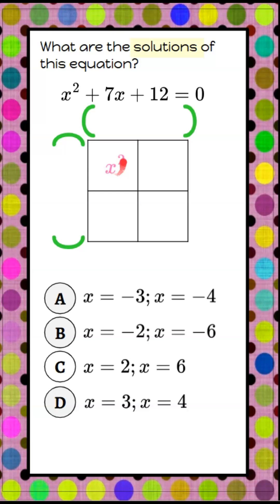So I know that this first box of my area model is going to represent my first term, x squared, and this bottom right box is going to represent our third term, our constant, which is positive 12. And then my middle boxes are going to represent my middle term, 7x. And I know that when I add this box to this box, it needs to equal 7x.